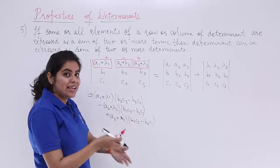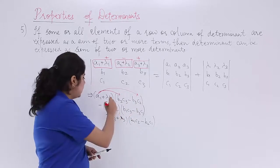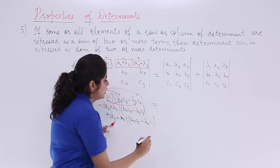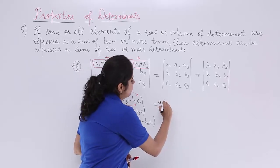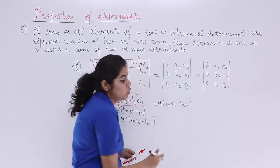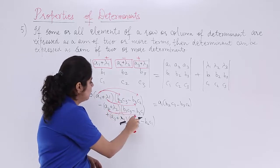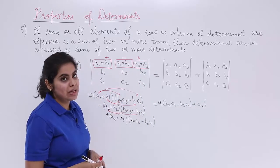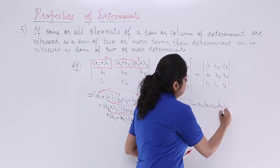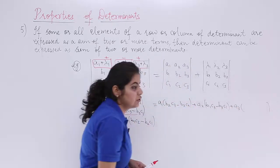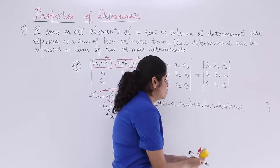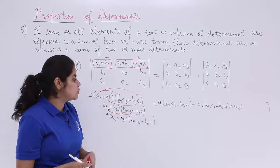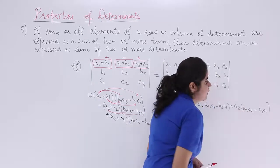Now we expand by multiplying out the a-terms and the lambda-terms separately. This gives: a1·(b2·c3 minus b3·c2) minus a2·(b1·c3 minus b3·c1) plus a3·(b1·c2 minus b2·c1). Note: for the a2 term the sign should be minus. The lambda terms are still to be written — don't ignore them.